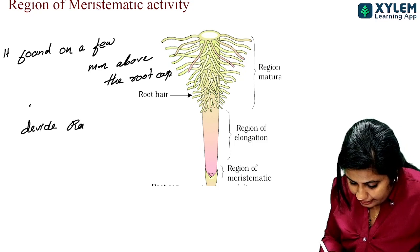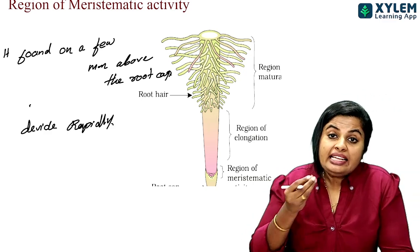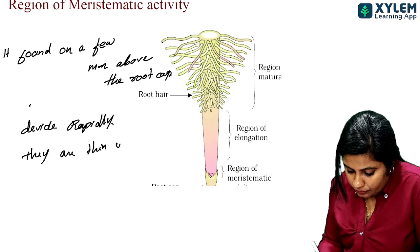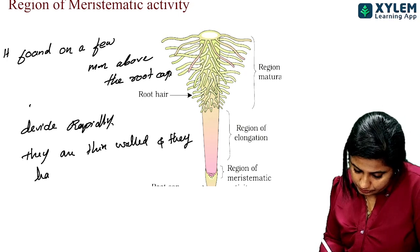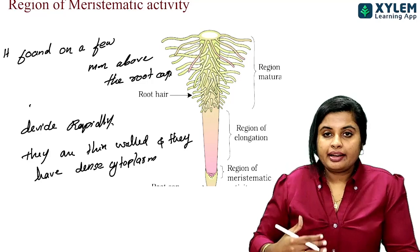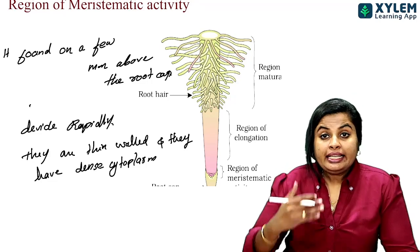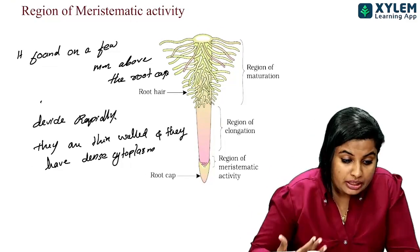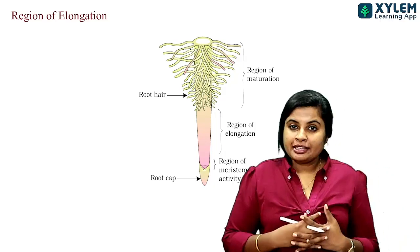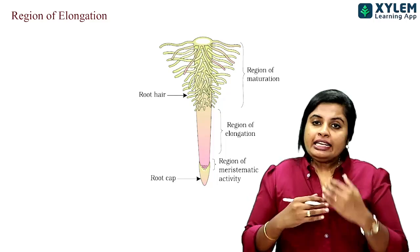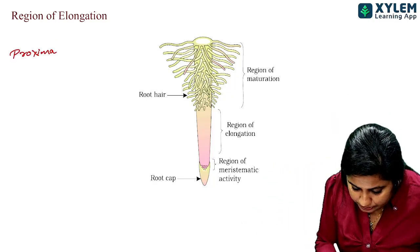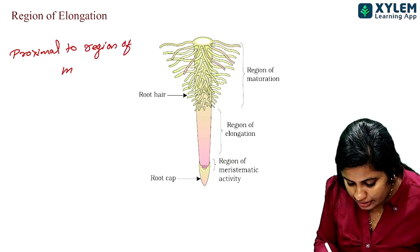The cells in this region divide rapidly. They are thin-walled and have dense cytoplasm. This region of meristematic activity leads into the region of elongation, which is a lengthwise increase.